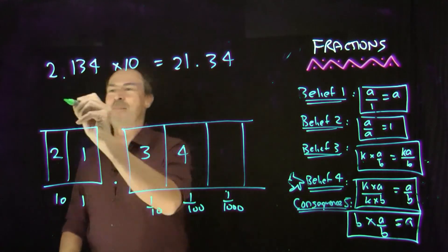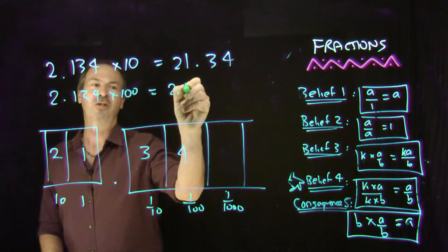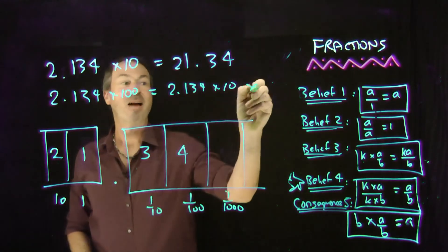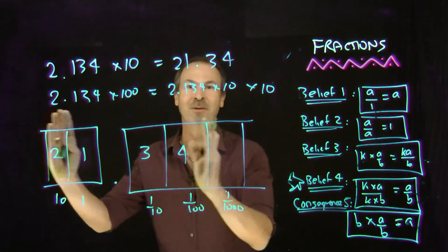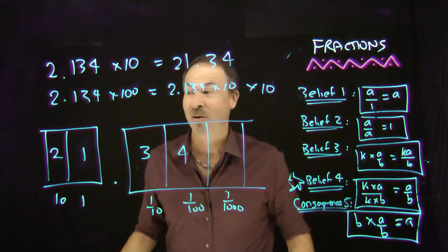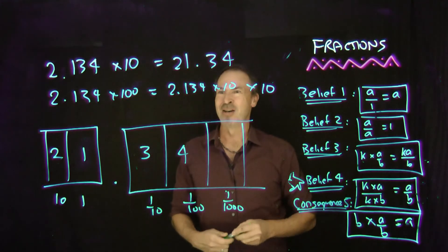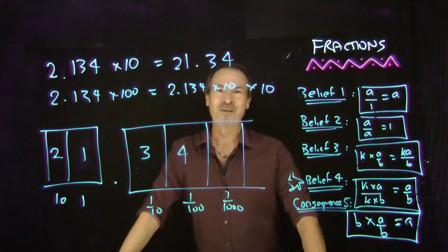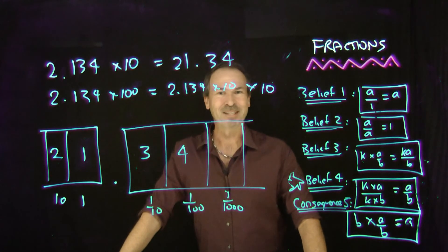And if you want to multiply by 100, think of 2.134 times 100 as times 10 and then times 10 again — so you shift those digits not once but twice. Or in school terms, the decimal point moves two places. I'll stop there — I spoke really fast in this video, hopefully you caught on, and let's keep going with our story.